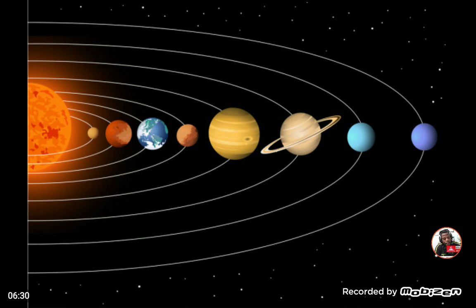The solar system consists of our sun — which is a star — and its eight planets, which are orbiting or revolving around the sun once every planetary year. Each planet takes either a longer or shorter time to complete its orbit. On earth, we go around the sun once every 365 and a quarter days, making one planetary earth year. The diagram on screen illustrates the orbits and the order of the planets away from the sun.